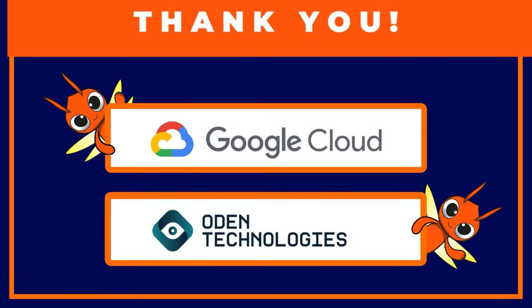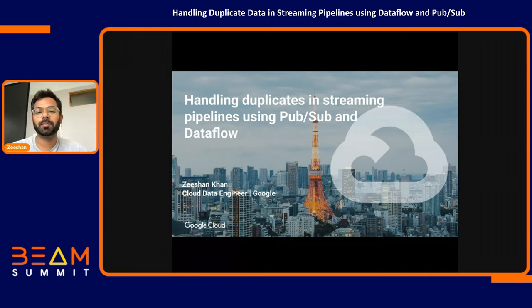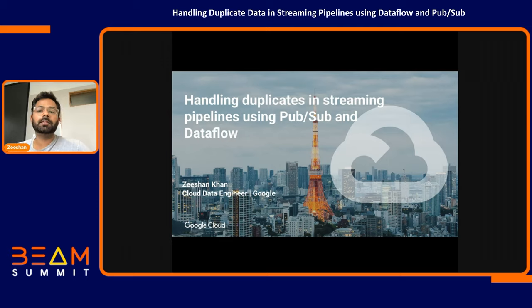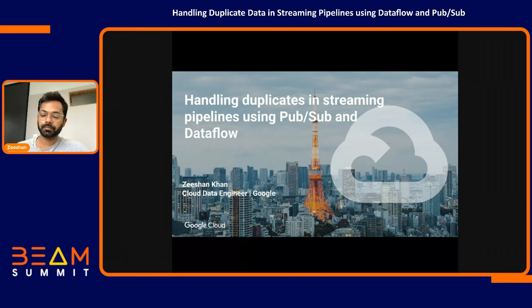Thank you for joining me today for this session. My name is Zeeshan, and I work as a cloud data engineer with Google based out of the San Francisco office. In my current role, we help enterprises that move to Google Cloud to design their data architecture and pipelines. A very common topic we come across when building streaming pipelines is the origin of duplicates and how they can be handled. In this talk, I'll give an overview of places where duplicates may appear, and what features and functionalities PubSub, Dataflow, and the Apache Beam SDK provide to handle such duplicates.